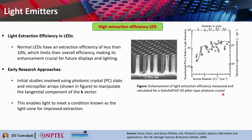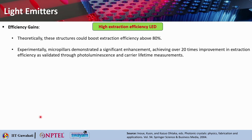Photonic crystal slabs and micro-pillar arrays can be used to manipulate the tangential component of the k vector, enabling extraction of more light through the light cone and improving efficiency. This enables light to meet a condition known as the light cone for improved extraction. Theoretically, this could boost extraction efficiency above 80 percent, compared to the otherwise 10 percent. Experimentally, micro-pillars demonstrated a significant enhancement, achieving over 20 percent improvement in extraction efficiency, validated through photoluminescence and carrier lifetime measurements.